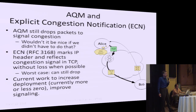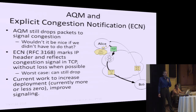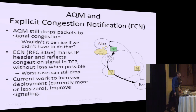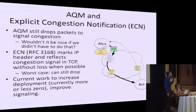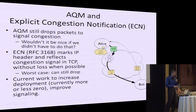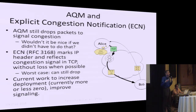ECN, explicit congestion notification: so far we've been talking about dropping a packet to signal congestion. ECN started from a simple idea — what if instead of dropping the packet, since we're doing this before the queue is full, we mark it and say 'things are getting bad, I would have dropped this but I'm going to be nice this time.' TCP reacts as if the packet had been dropped. The result is you never drop a packet, the rate adapts to congestion conditions in the network, and everything is fine most of the time.